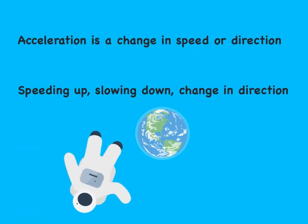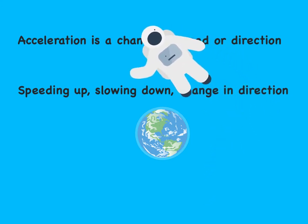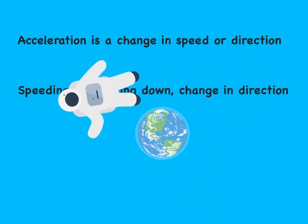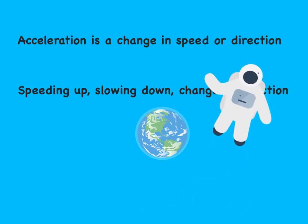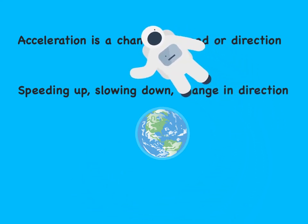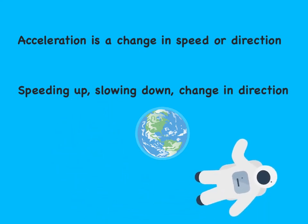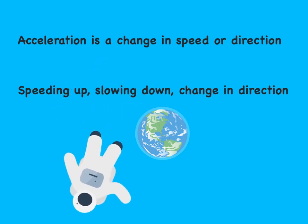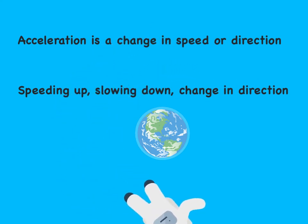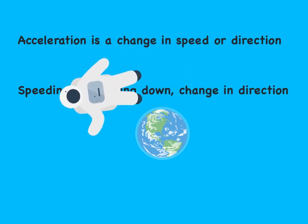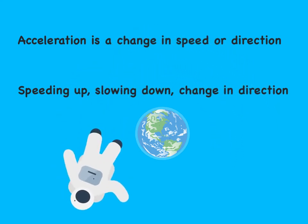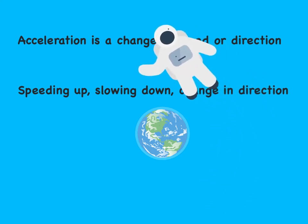Finally, we have acceleration. Acceleration occurs when there is a change in an object's speed or the direction that it is traveling. Some examples of acceleration are speeding up or accelerating, but an object could also be slowing down or decelerating. Acceleration also happens when there is a change in direction or if it stops moving altogether. Take for instance this astronaut — he is going around the earth at a constant speed, but he has acceleration because he is always changing direction: sometimes moving downwards, other times to the right, and then back towards the left. So he is accelerating even though he is not changing speeds.